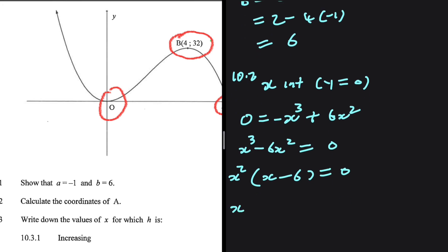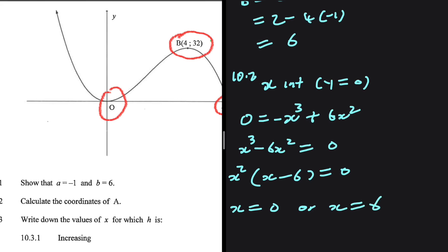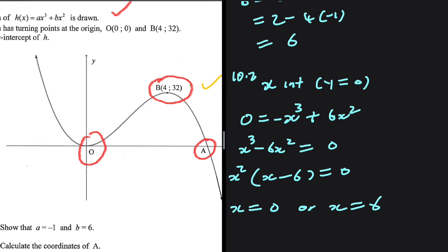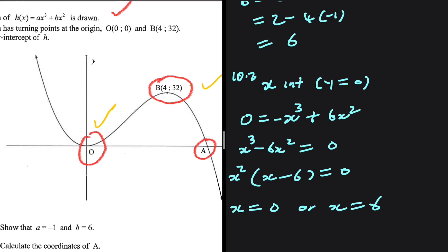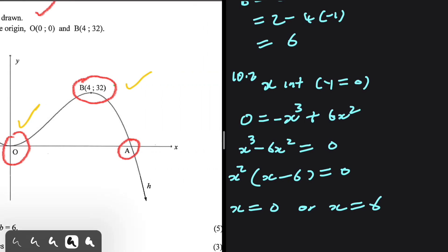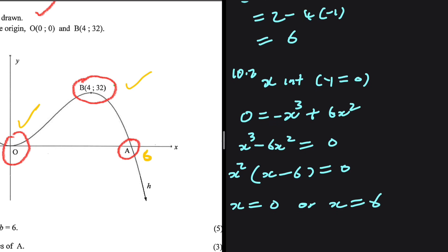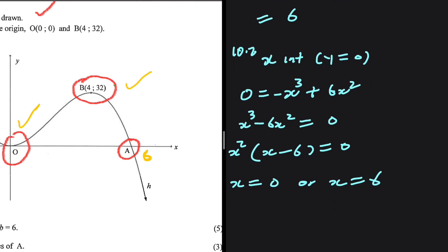So x equals 0 or x equals 6. We know x equals 0 is at the origin, so x equals 6 is the x-coordinate of A. Since A is an x-intercept, the y-value is 0, giving the coordinates of A as (6, 0).